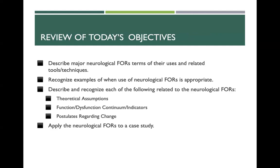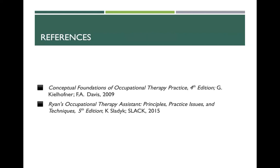These are the review of today's objectives: describing major neurological frames of reference in terms of their use and related tools and techniques; recognizing examples of when use of a neurological frame of reference is appropriate; and describing the theoretical assumptions, function-dysfunction continuum, indicators, and postulates regarding change. In class, we'll apply the neurological frames of reference to case studies. Come to class Monday with questions — we'll review the PowerPoint, go over any confusions, then work through a case study together for the whole class period.